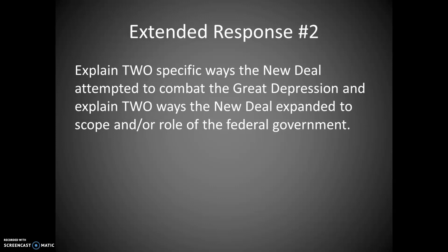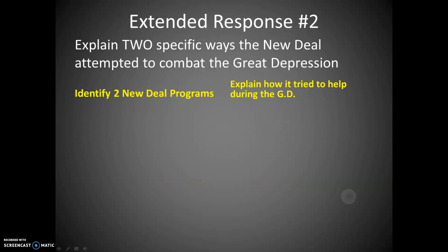Extended response number two has a similar format: explain two specific ways the New Deal attempted to combat the Great Depression, and explain two ways the New Deal expanded the scope and role of the federal government. That's another two and two. These do not have to be the same thing, although you can use the same evidence in both cases. For the first part, identify two New Deal programs — that's the easiest approach — and then explain how each one tried to help during the Depression. Lesson 4 is your source for this.